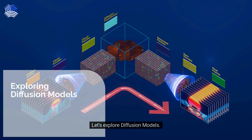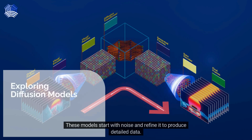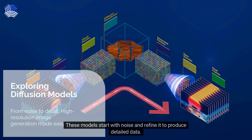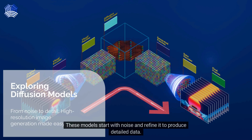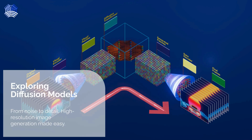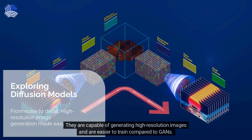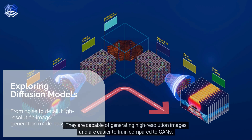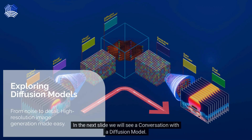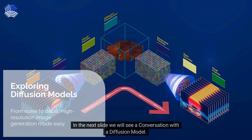Let's explore diffusion models. These models start with noise and refine it to produce detailed data. They are capable of generating high-resolution images and are easier to train compared to GANs. In the next slide, we'll see a conversation with a diffusion model.